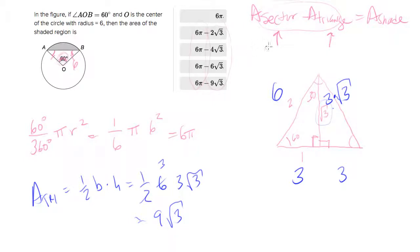So what we're looking for - the area of the sector we figured out. Sector is 6π, the triangle is 9√3, so that is the area of the shaded region: 6π - 9√3.